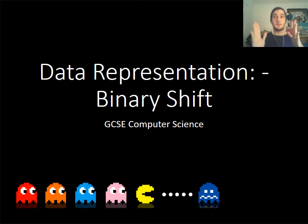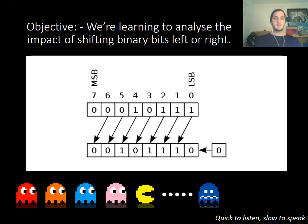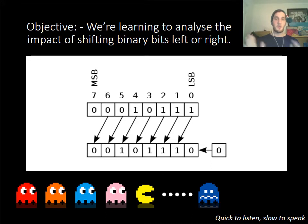Binary shift is where we move the numbers either left or right. So say for example you have a binary number here — we've got 1110100. Now please ignore the place value of this. This was just to demonstrate what is happening.